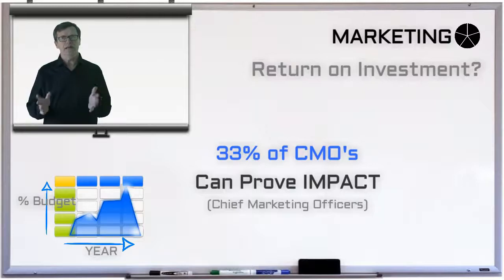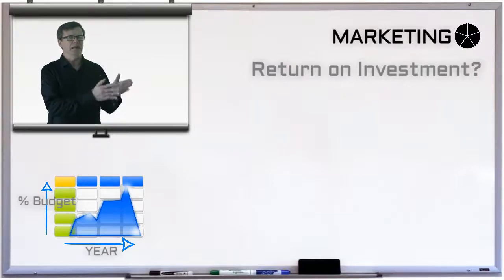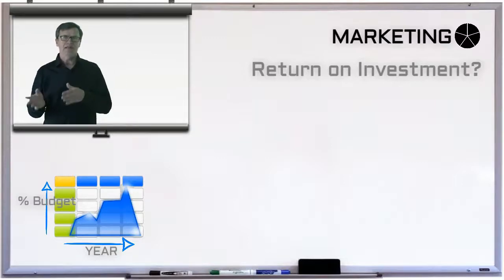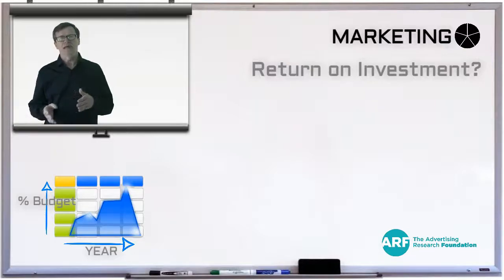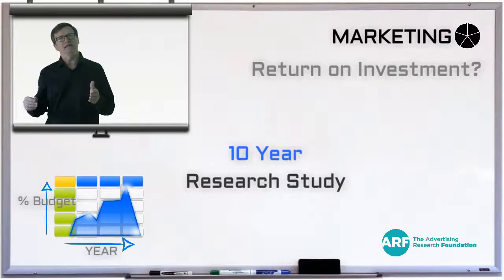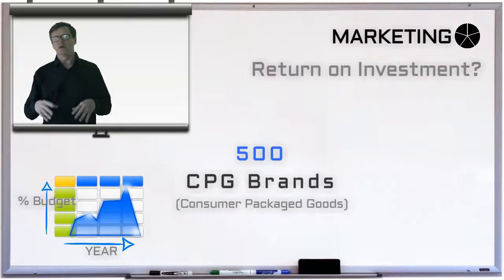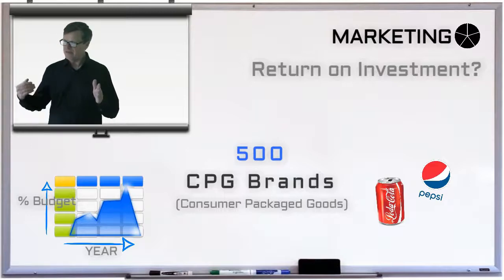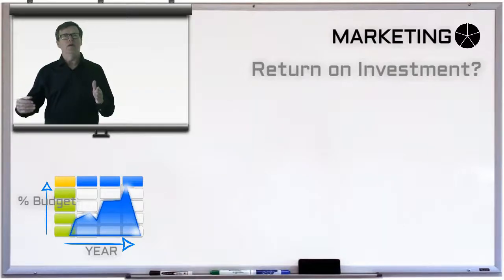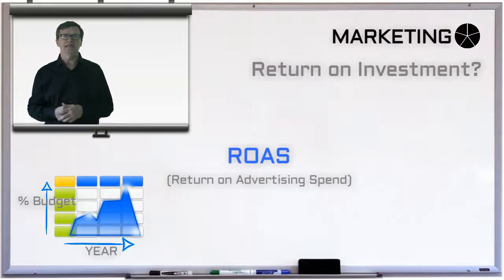So where does that leave us? Well, there is some other data which might help us understand more about marketing return on investment by area. For example, the Advertising Research Foundation, or ARF for short, has been carrying out a cross-industry research project for more than 10 years. In that research, they track TV, online, video, and mobile advertising for 500 CPG brands — consumer packaged goods companies like Coca-Cola, Etsy, etc. So what have the ARF discovered about marketing ROI, or in ARF's terminology, ROAS — Return on Advertising Spend?